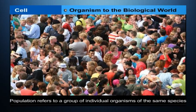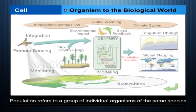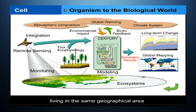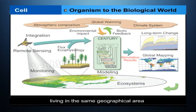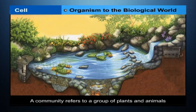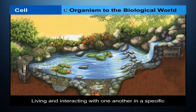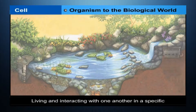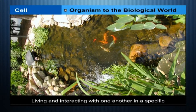Population refers to a group of individual organisms of the same species living in the same geographical area — for example, all human beings living in a locality. A community refers to a group of plants and animals living and interacting with one another in a specific region under relatively similar environmental conditions — for example, all plants and animals living in a locality.